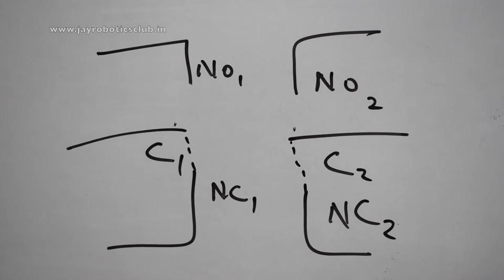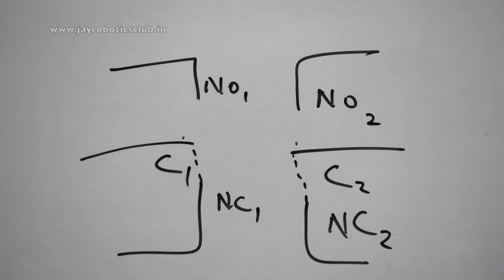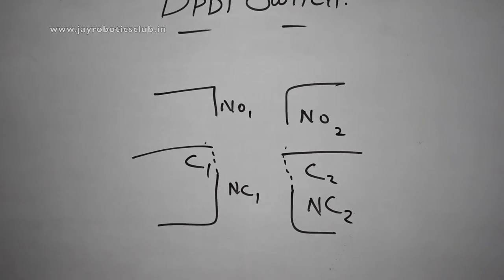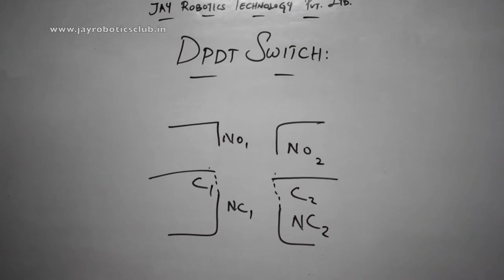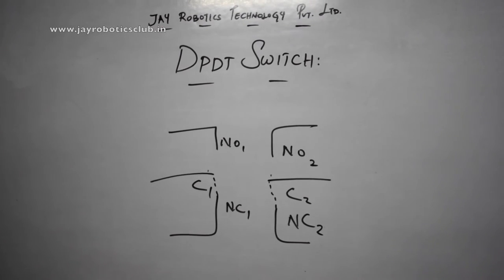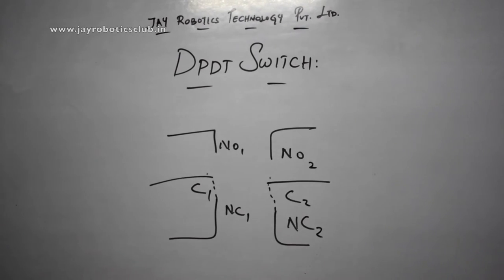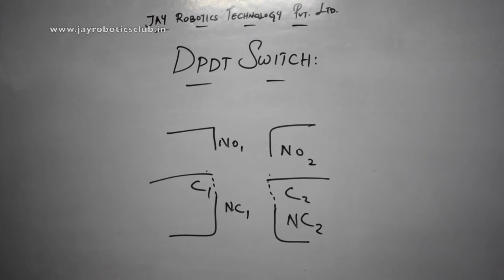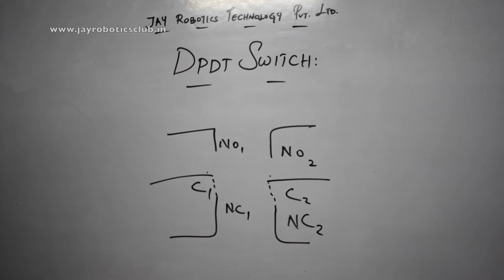So this is how a DPDT switch works and this is a prime important switch because people use this to control a DC motor to go in both directions. You can control it to go in forward as well as reverse directions. So next tutorial we'll see how to use this DPDT switch to control a motor in a forward and a reverse direction.